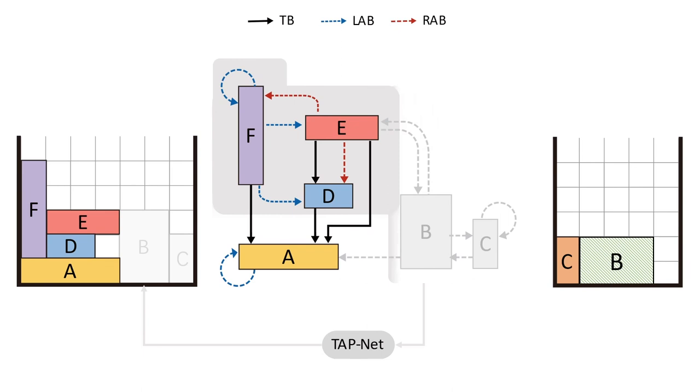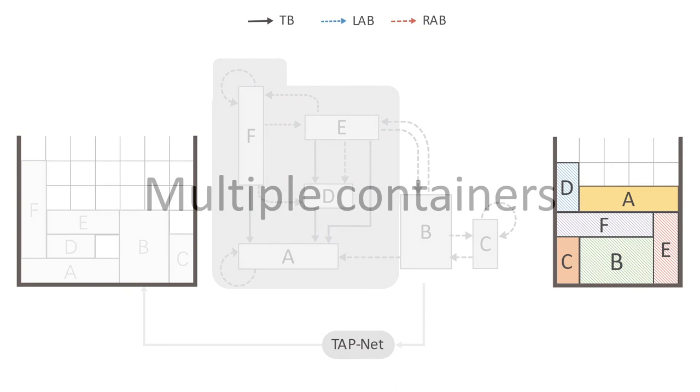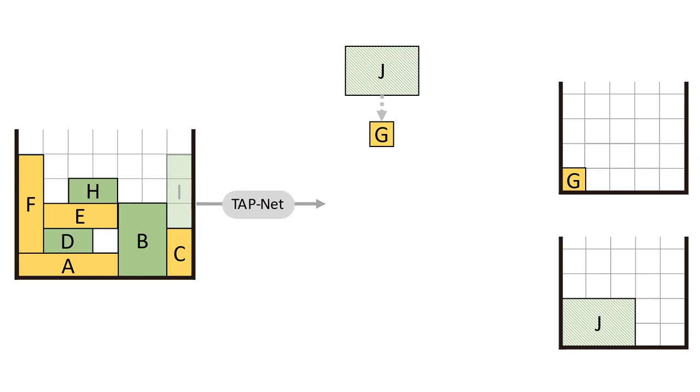Our method can also handle cases when objects need to be packed into different target containers. For example, in delivery industry, packages from the same container may need to be shipped to different customers or distribution centers. Objects with different target containers are shown in different colors.